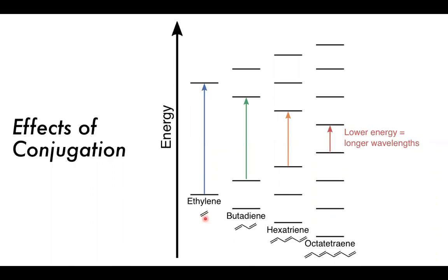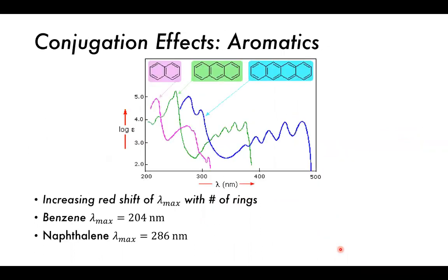With ethylene, the compound is colorless. As we increase conjugation we change the color to become darker and redder. Looking at naphthalene, anthracene, and tetracene: as we increase the number of rings and conjugation, we observe a shift to longer wavelengths. Longer wavelengths means lower energies. For example, benzene's lambda max is 204 nm, naphthalene's is 286 nm. The increasing red-shift of lambda max with the number of rings demonstrates that increasing conjugation leads to lower energy electronic transitions.